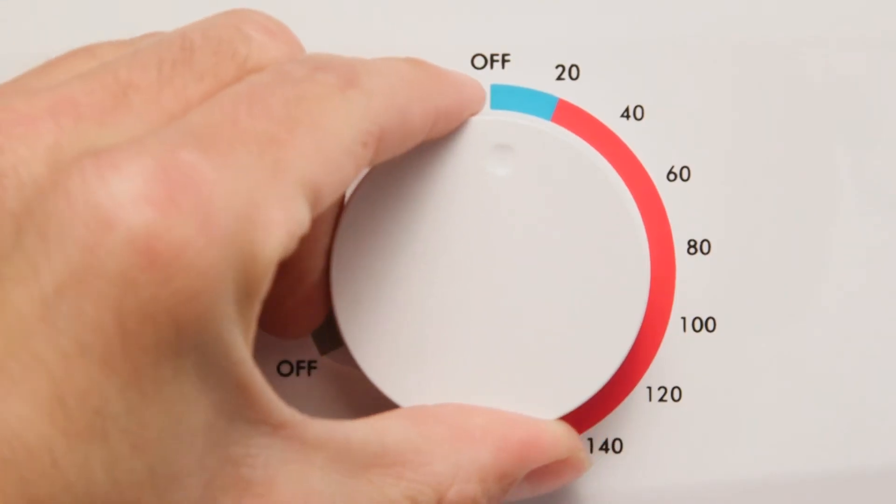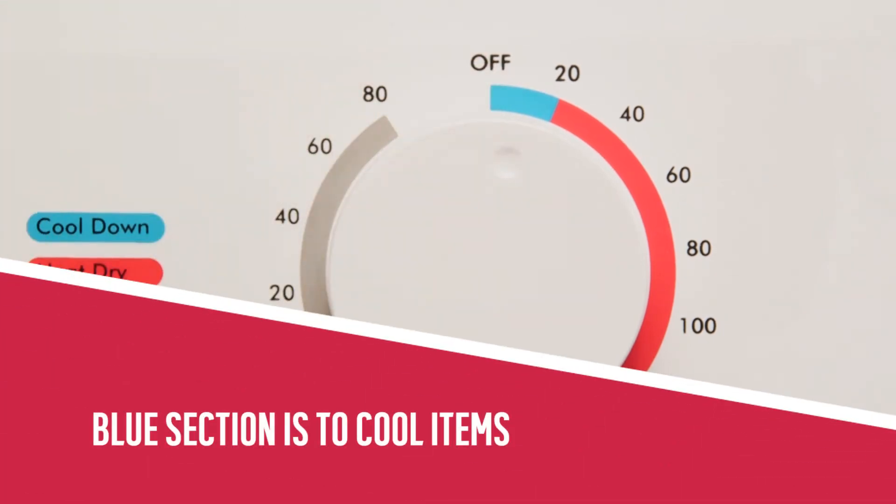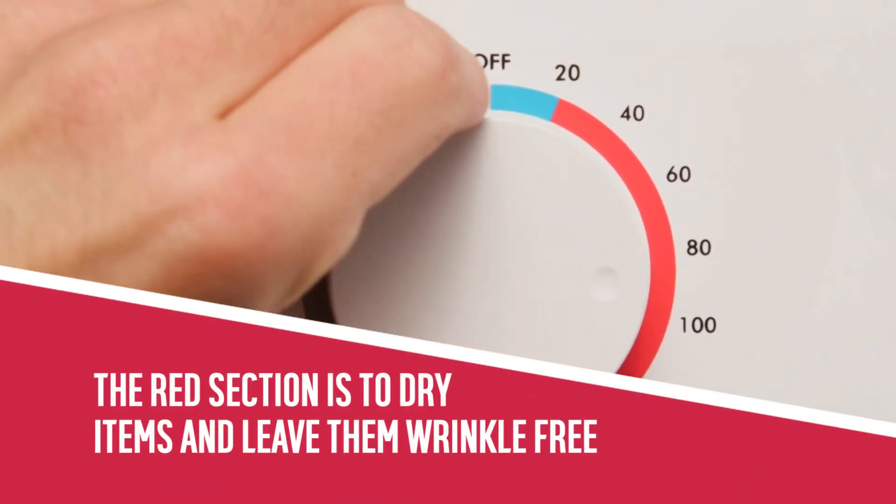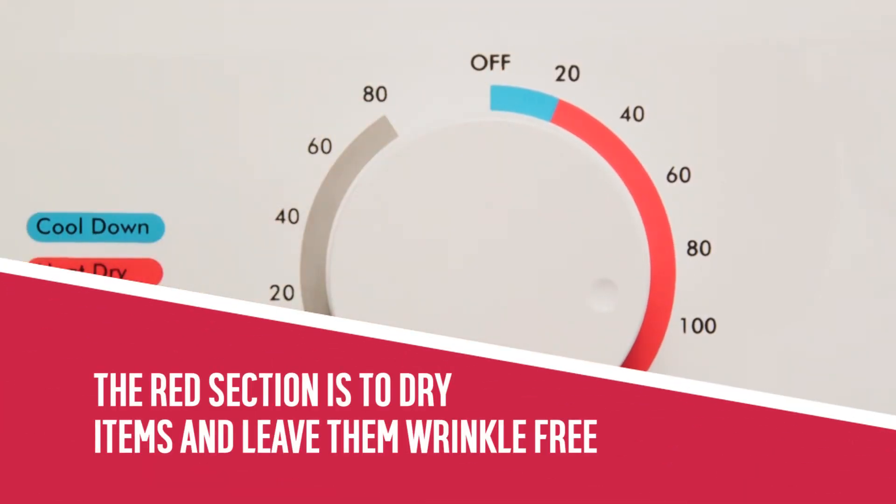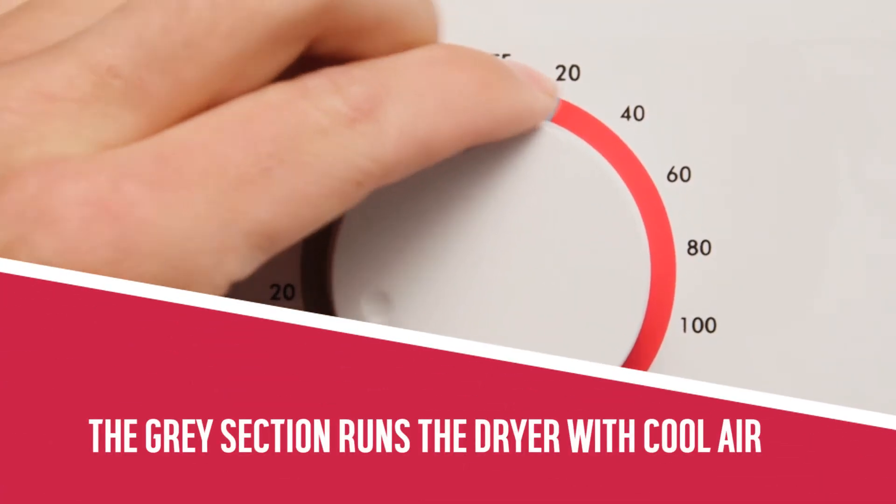Turn the dial to your required drying setting. The blue section of the dial is to cool items that have just been dried. The red section will dry and cool items and, in most cases, leave them wrinkle-free. The grey section runs the dryer with cool air.